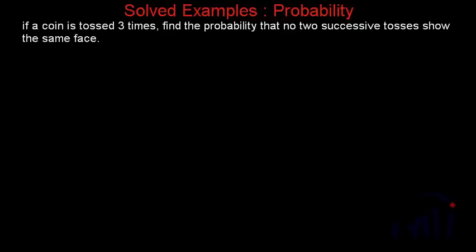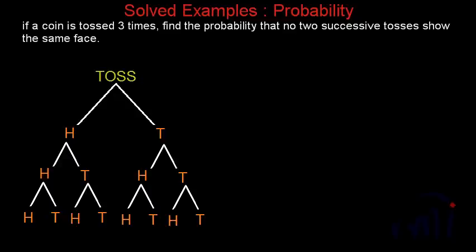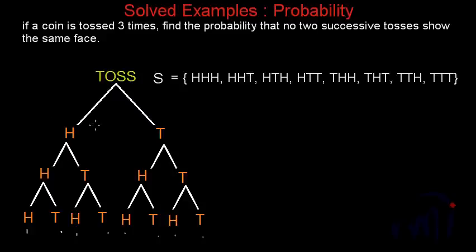If a coin is tossed three times, the tree diagram for these tosses will be something like this. These are the eight possible outcomes of these three consecutive tosses, and if I write them in the set, the solution space will look something like this. These are all the possible outcomes when we toss a coin three times, and all of them are equally probable because the coin is fair.